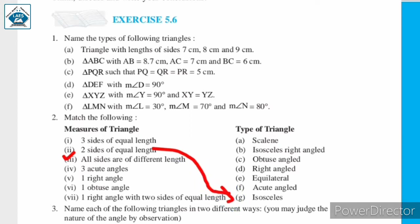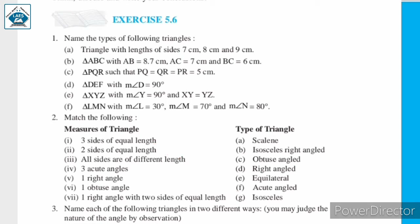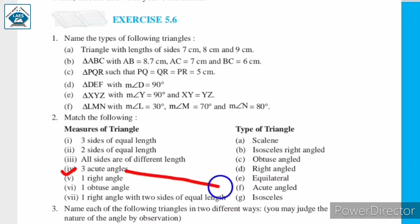So, second matches with G — two sides of equal length: isosceles triangle. Next: all sides are of different length. If all sides of a triangle are of different length, then it is a scalene triangle. Next: three acute angles — if all the angles of this triangle are acute angles, then it is an acute angled triangle.